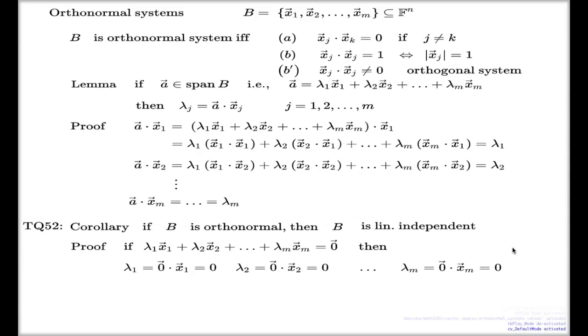Of course, the whole weight of this, the proof of the corollary is only two lines. The whole weight sits here, in this lemma, which is a more general statement, which gives you the formula for finding the coefficients.